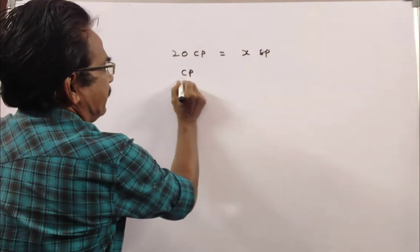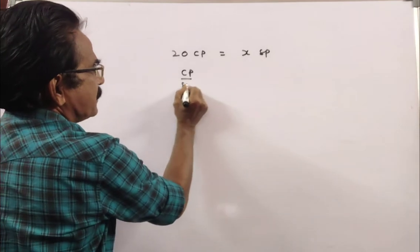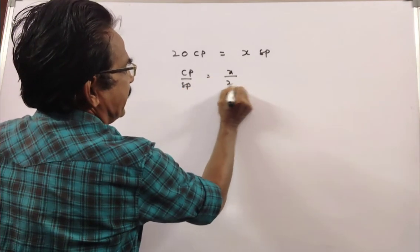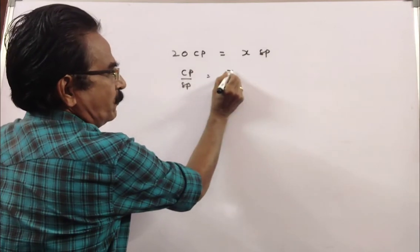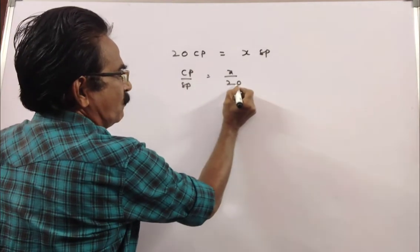CP by SP is equal to X by 20. This means if CP equals X, then SP equals 20.